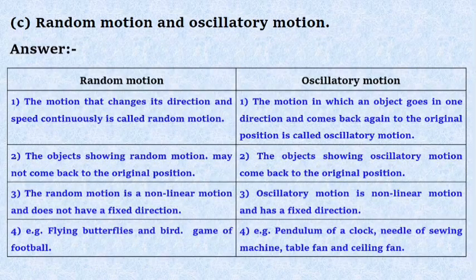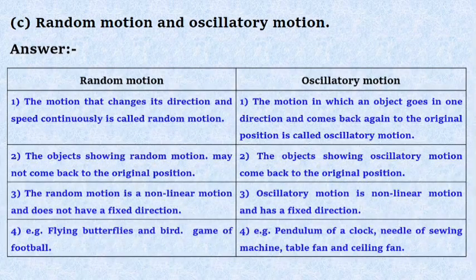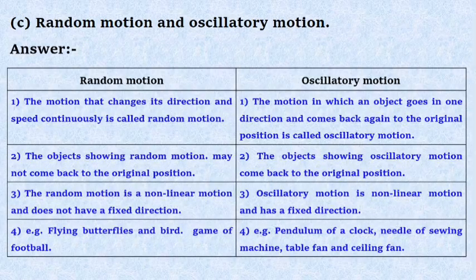Random motion is a non-linear motion and does not have a fixed direction. Oscillatory motion is a non-linear motion and has a fixed direction.